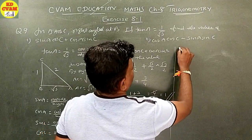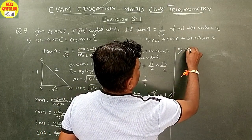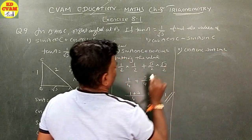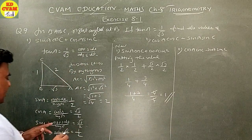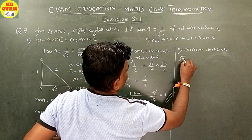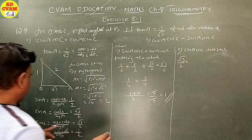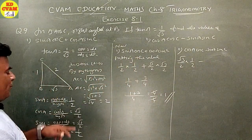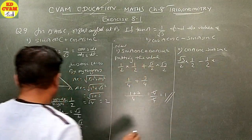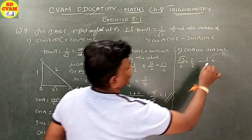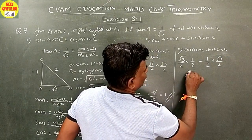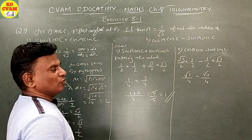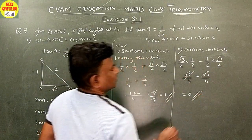Part 2: cos A cos C minus sin A sin C. Cos A is root 3 upon 2, cos C is 1 upon 2, sin A is 1 upon 2, sin C is root 3 upon 2. This gives root 3 upon 4 minus root 3 upon 4, which equals 0.